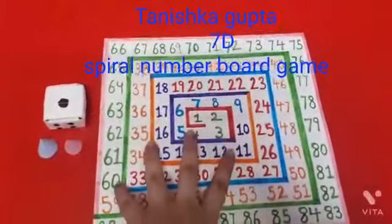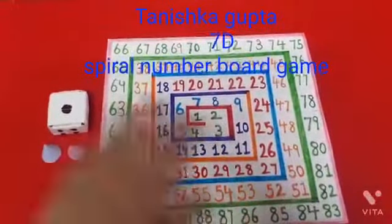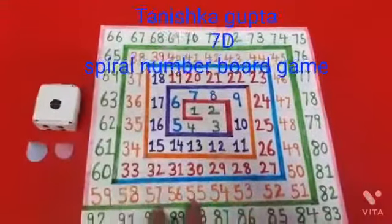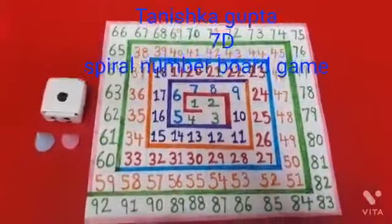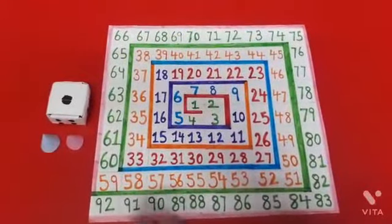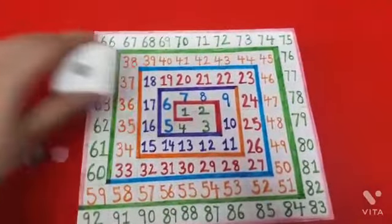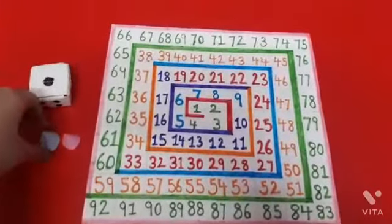Hello ma'am, my name is Tanishka Gupta and today I'm going to show you my board game. This board game is called spiral number board game. Here I have my dice and two cubes.